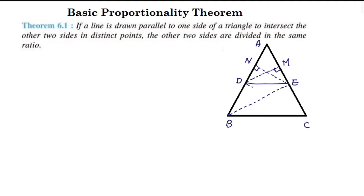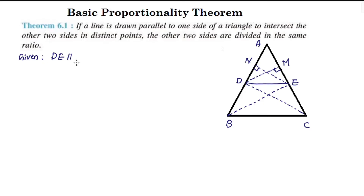Now we have completed the picture. We will do this as given, to prove, construction. What is given? A line drawn parallel to one side of a triangle — so DE is parallel to BC. That is given. DE parallel BC is given. To prove: the same ratio — the sides are divided in the same ratio.